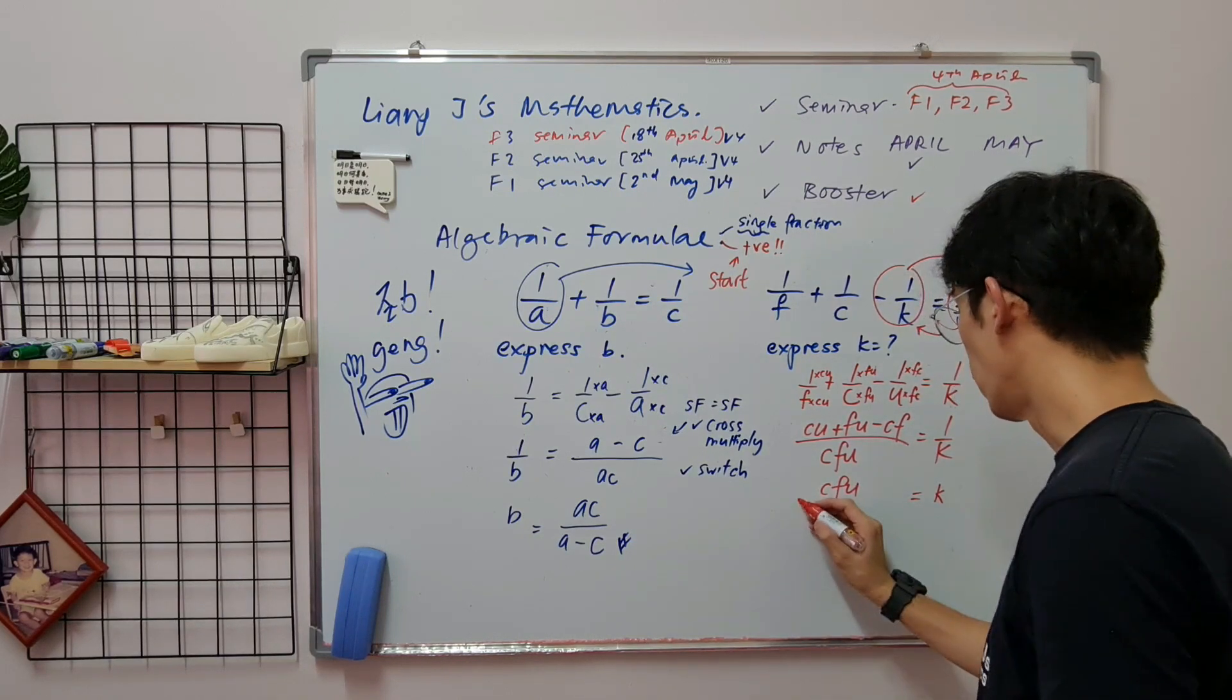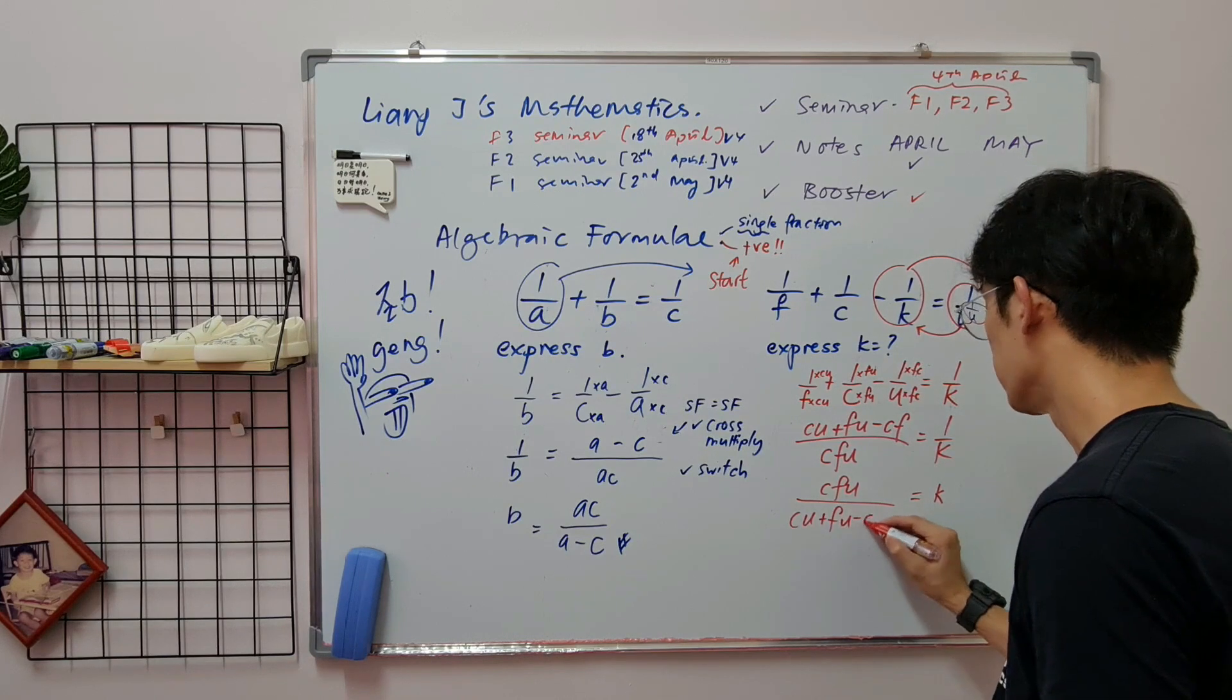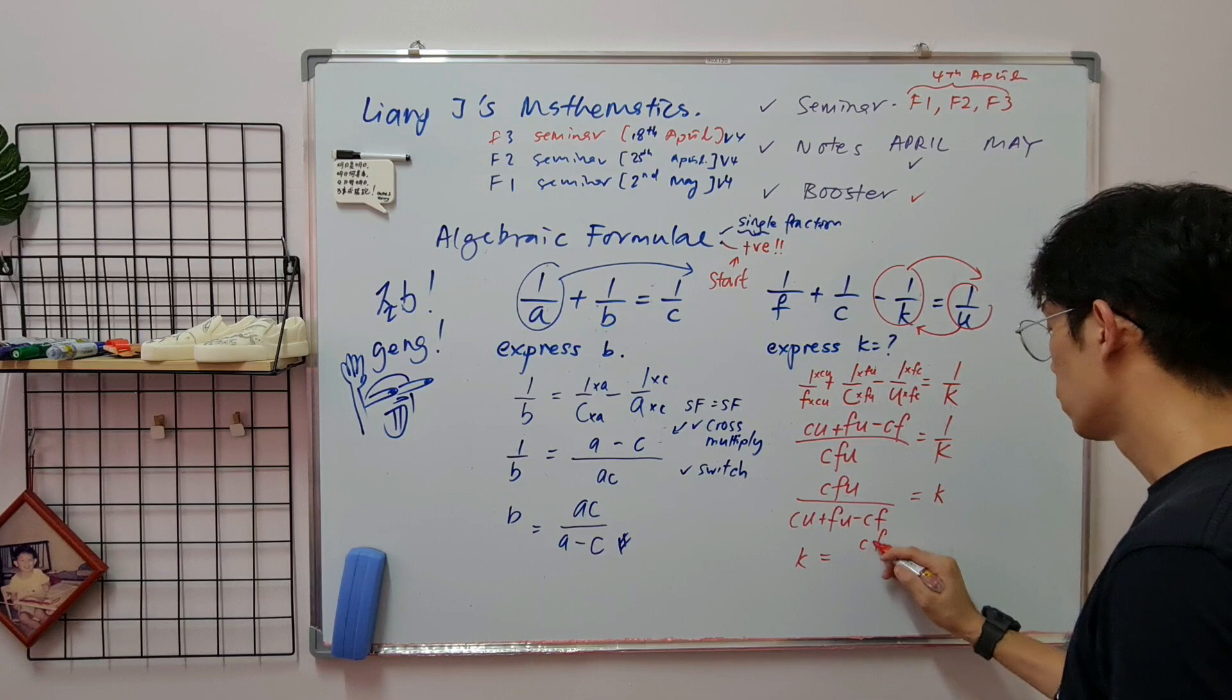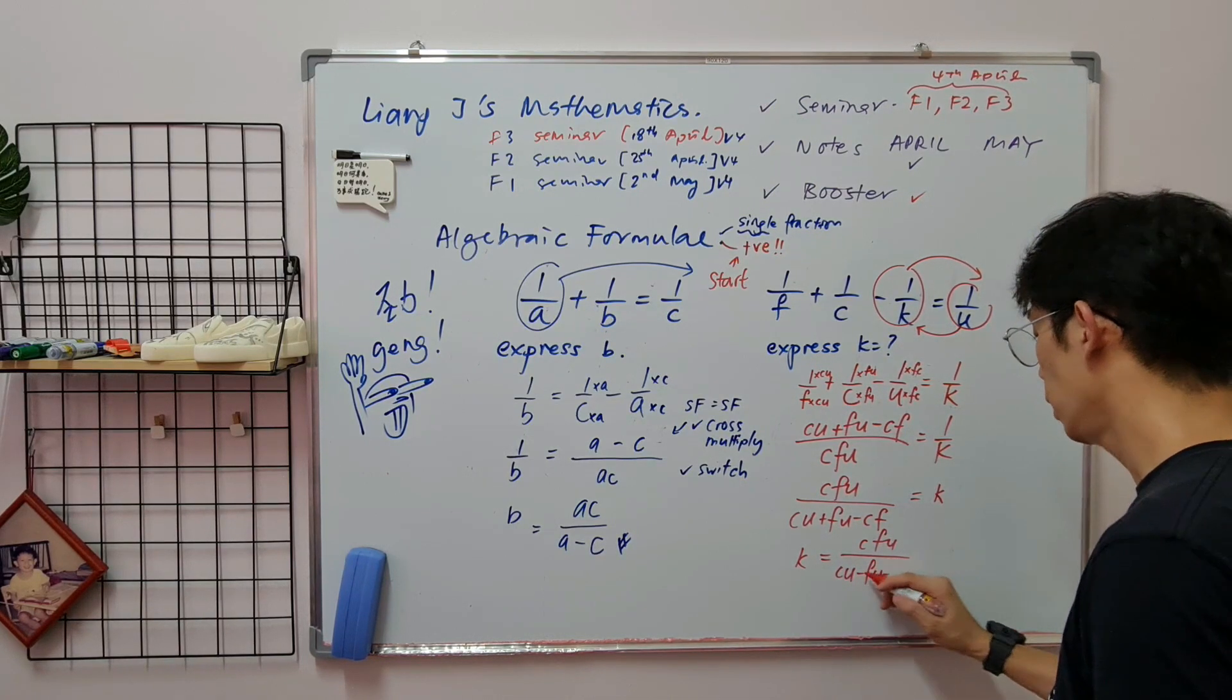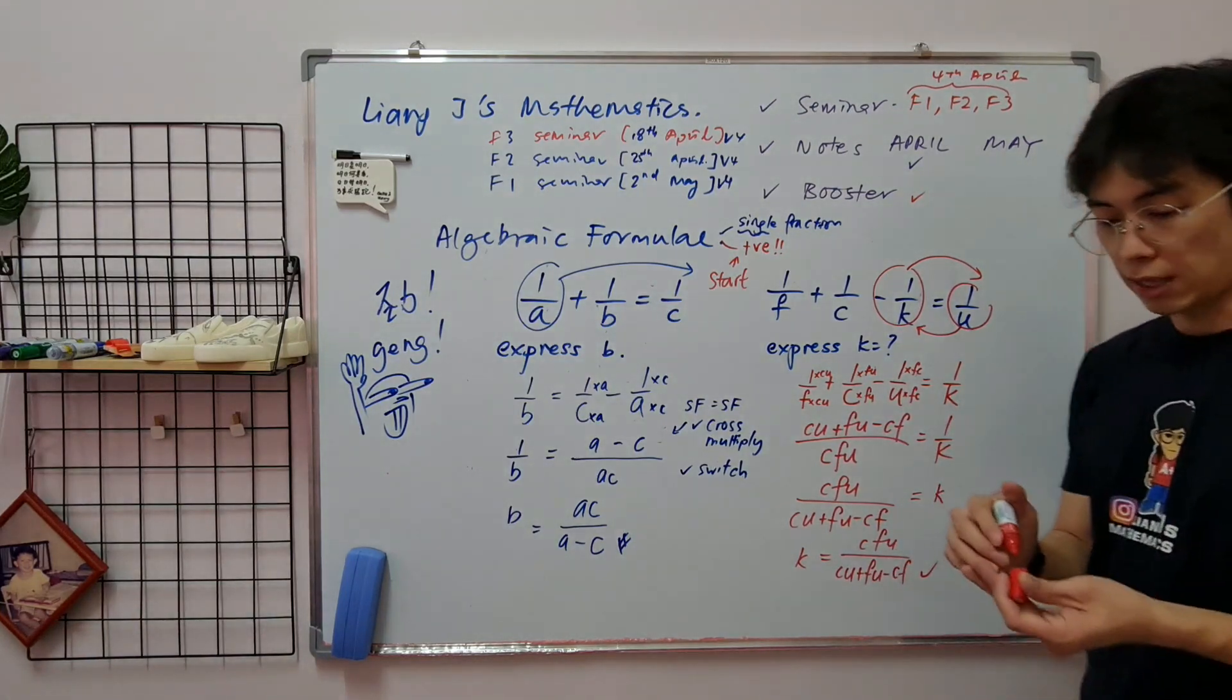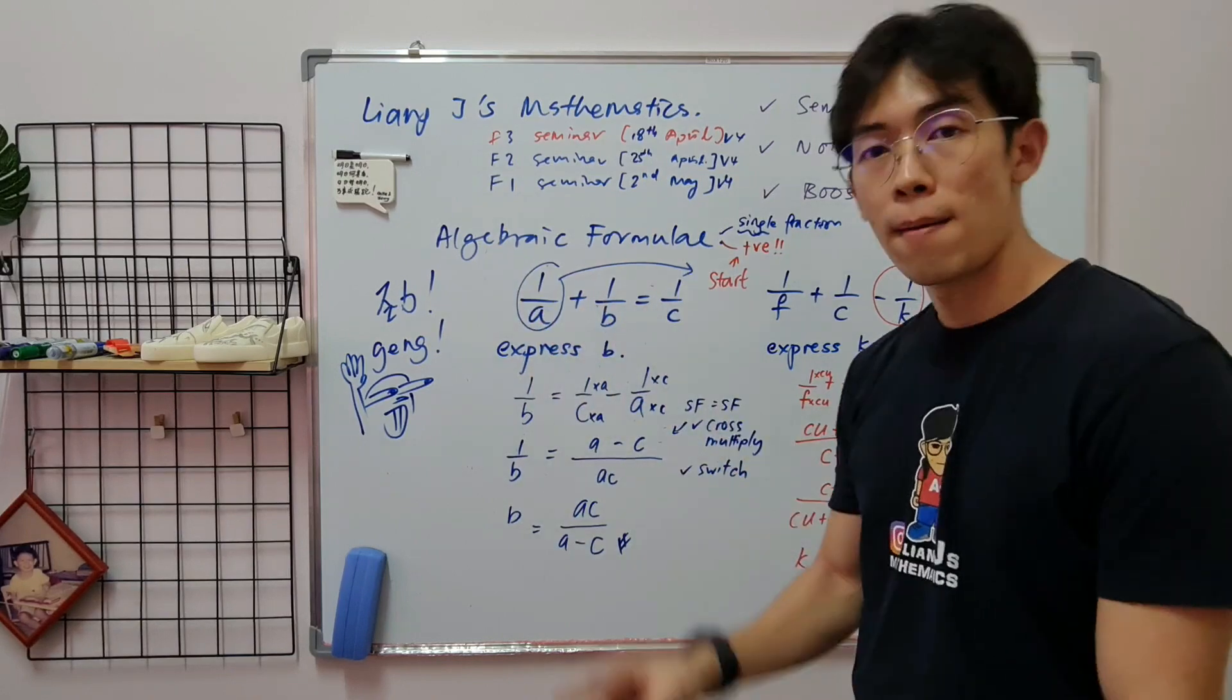Minus CF. Then this one, you know, you have to rewrite it one more time. So this one over CU minus, ding ding, minus plus then FC. So that's how you do your pro version of algebraic formula. Bye.